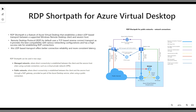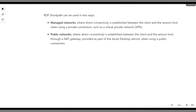Whenever possible, it is highly recommended to use RDP Short Path so that latency and round trip are reduced and users have a better experience. RDP Short Path can be used in two ways. One is managed network, where direct connectivity is established between the client and session host using a private connection such as VPN, site-to-site VPN, point-to-site VPN, or ExpressRoute — purely for the corporate network.